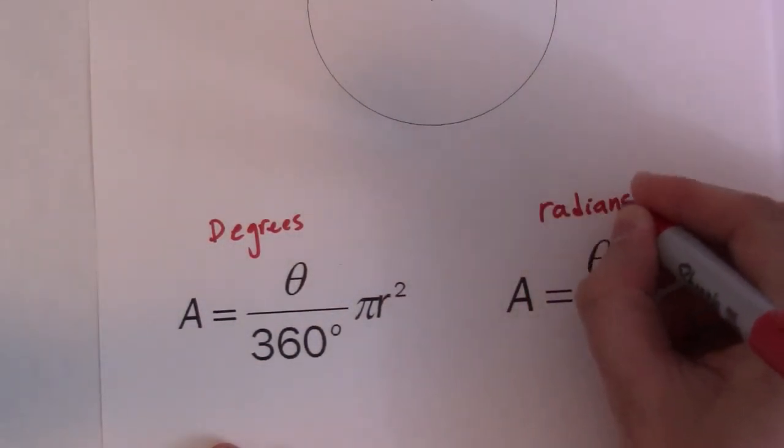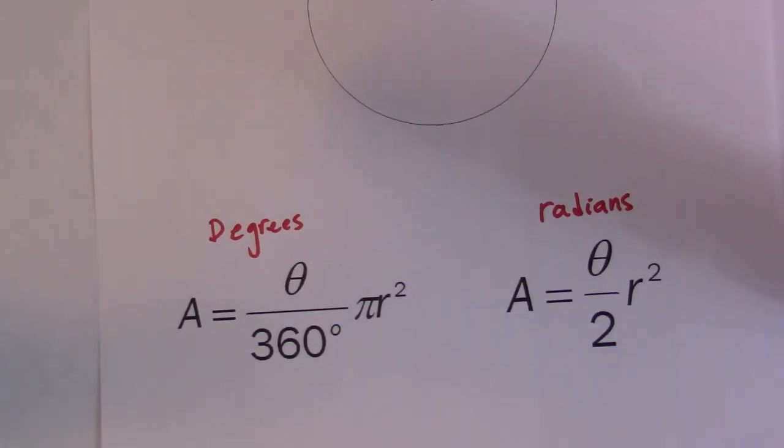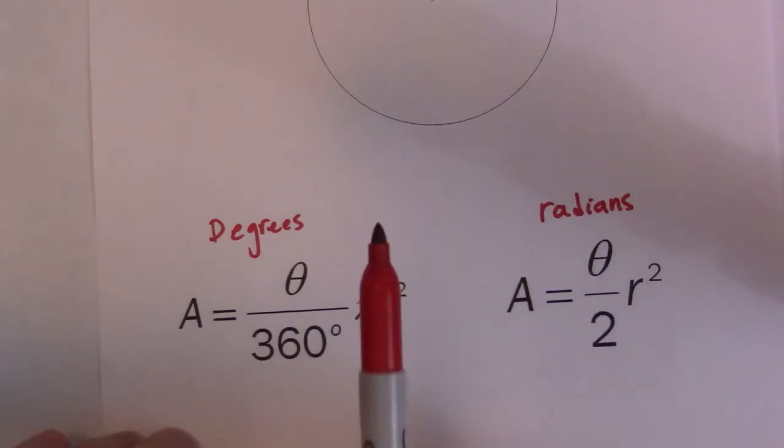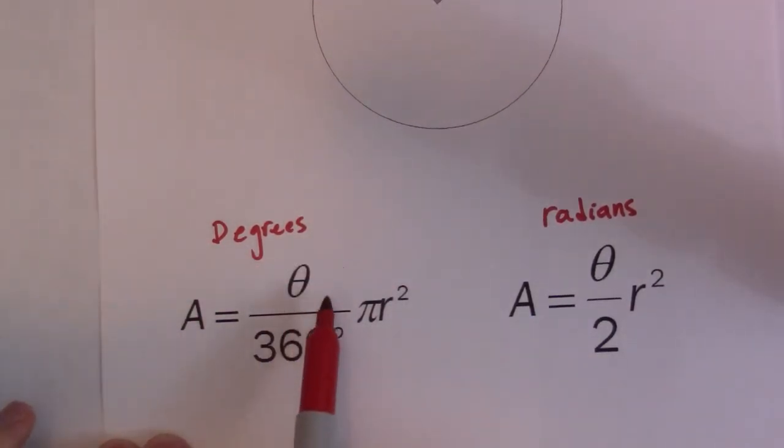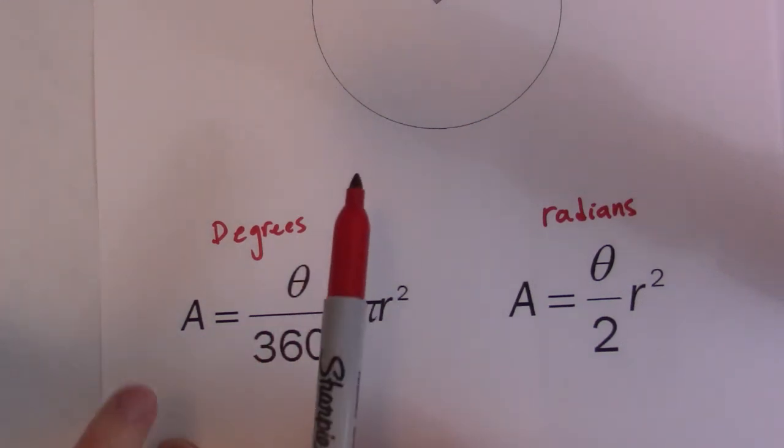If you know how to convert from degrees to radians, then you only need to know one formula. I like to know both, and depending on the question, use whatever one is most appropriate. If you know how to convert back and forth, then you got her made. To be honest, I'd probably use this formula more.